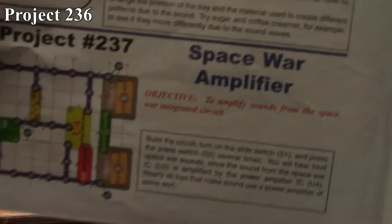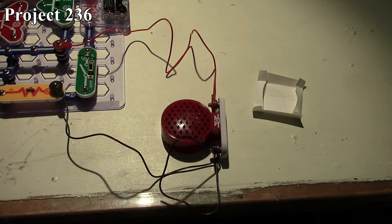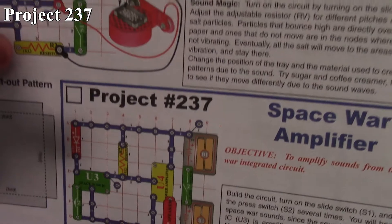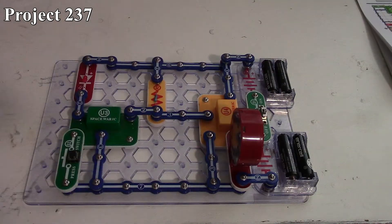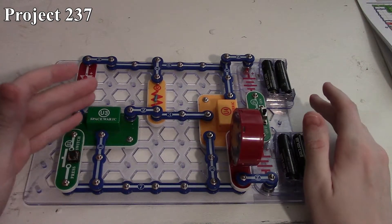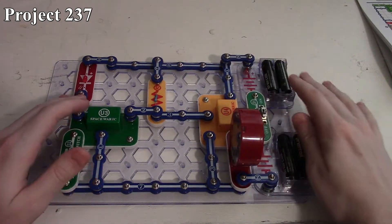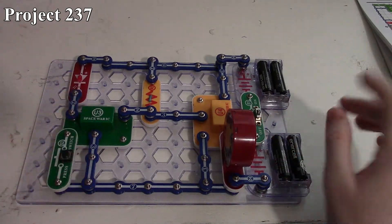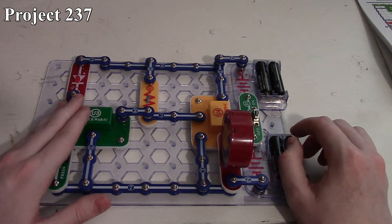That is project 236. Now project 237 is our Space War amplifier. There it is in the book, there it is on the board. Essentially, we take our Space War IC, which we've heard sounds from before, but we make use of 6 volts with our amplifier IC to amplify the output signal of the Space War IC so that it sounds louder.